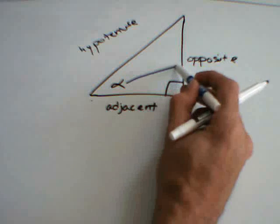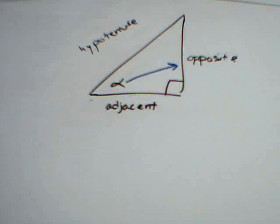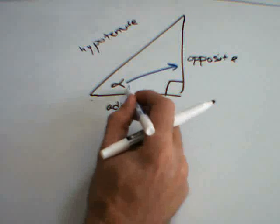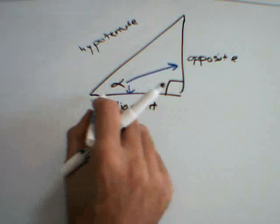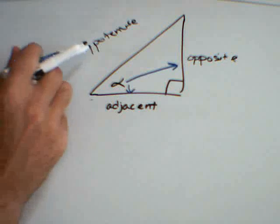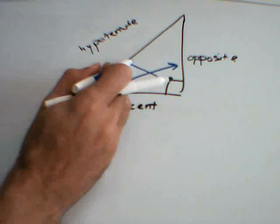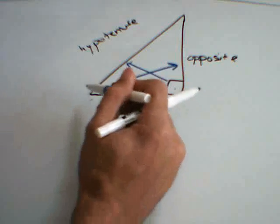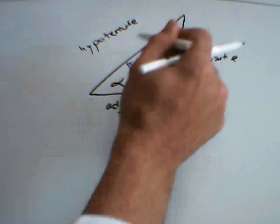The side that is opposite that angle would be this side. The side that is adjacent to that angle would be this side. And then the hypotenuse in a right triangle is always opposite from the right angle. It's also always the longest of the three sides.